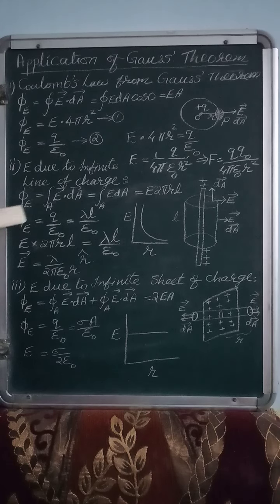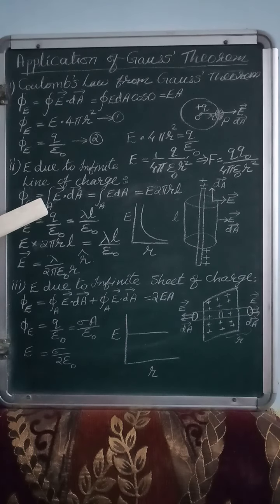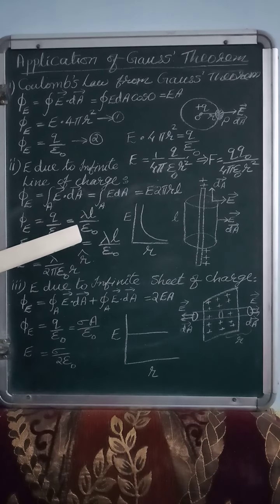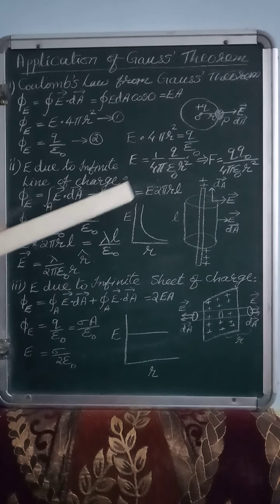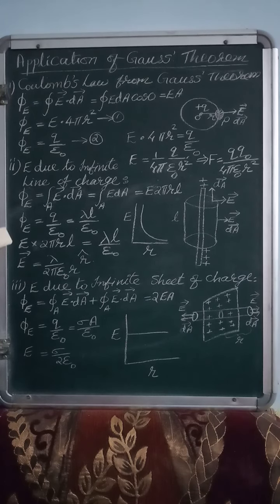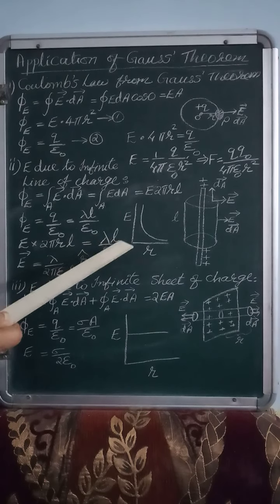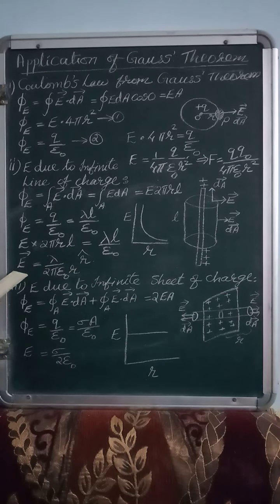The second formula is Q/ε₀ from Gauss theorem. Since the charges are placed on the line, we can replace Q in terms of linear charge density lambda: Q = λL. So Φ_E = λL/ε₀. These are the two equations for electric flux. Equating the right-hand sides: E·2πRL = λL/ε₀. L cancels from both sides, giving E = λ/(2πε₀R).